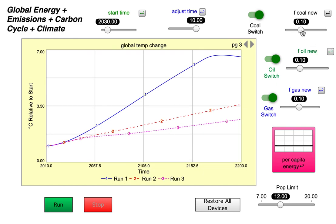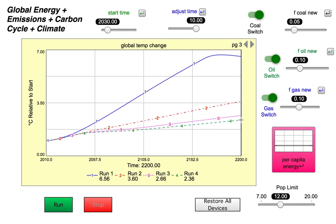Now we'll change F coal new to 0.05 and run it again. And we see we're still up here at 2.36. So we're still above 2.